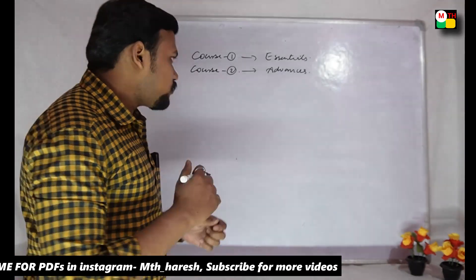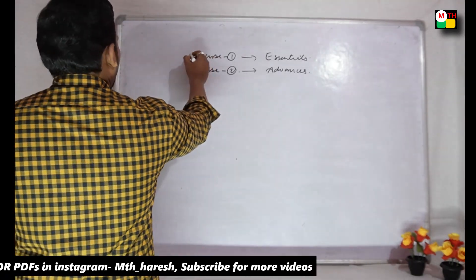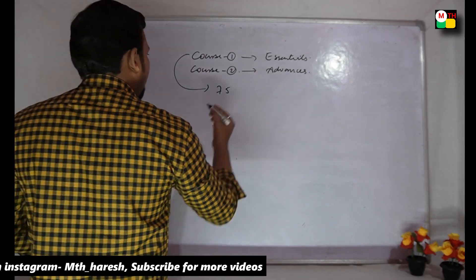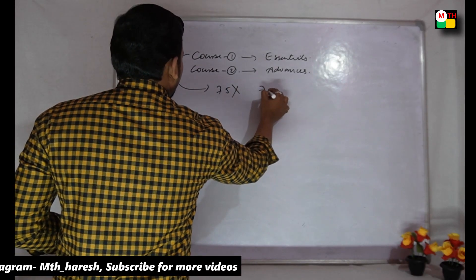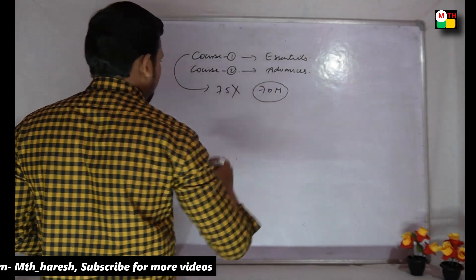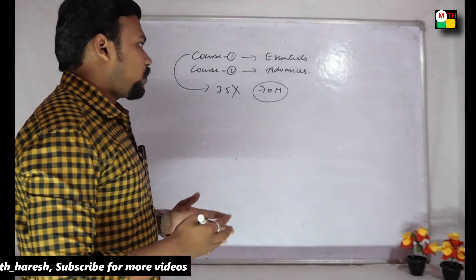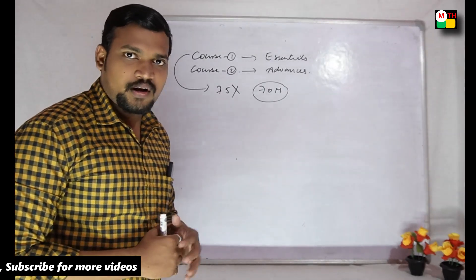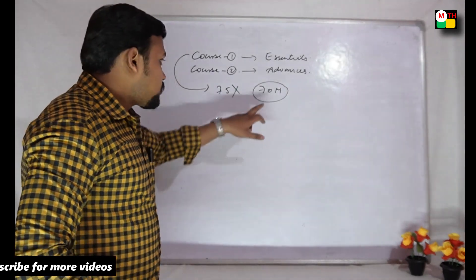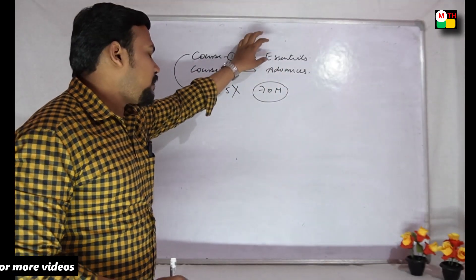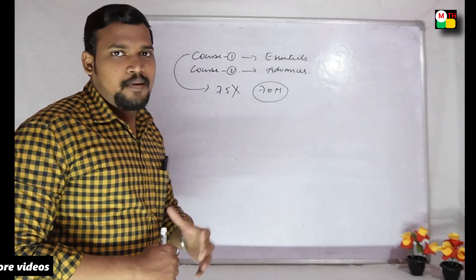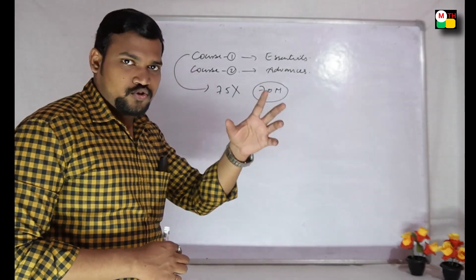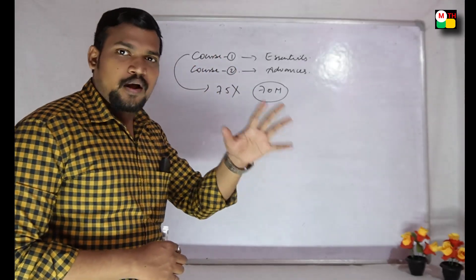So first, this paper is under 75 marks total. Around 70 marks will be there. The video link is in the description. Both papers — the Essentials paper and the Advances paper — are each 70 marks. So how are those 70 marks divided? That is the main question here.